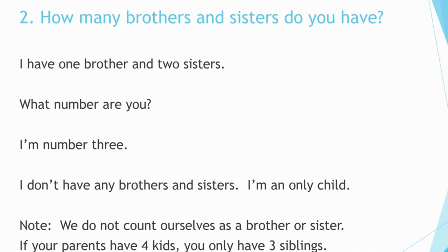We do not count ourselves as a brother or sister. If your parents have four kids, you have only three siblings. Siblings are brothers and sisters.